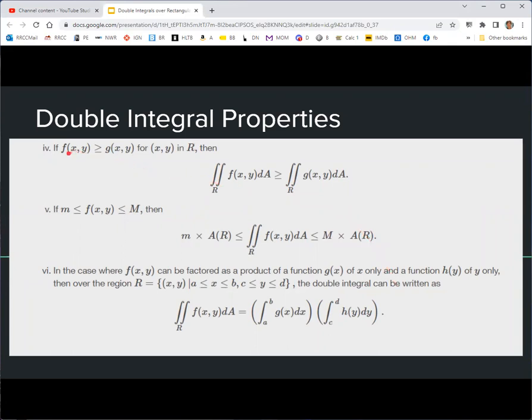Other three properties: if f is less than g over the whole rectangle, then the integral of f is less than the integral of g. Sort of a squeeze theorem, if f is between little m and big m, then the integral of f is between little m times the area and big m times the area of the rectangle. And then there was one like this for integrals, single integrals, that if f is equal to g times h, then you can write the integral as the product of integrals. Notice here, g has to be just a function of x and h is just a function of y. This becomes very helpful when we evaluate them later on too.